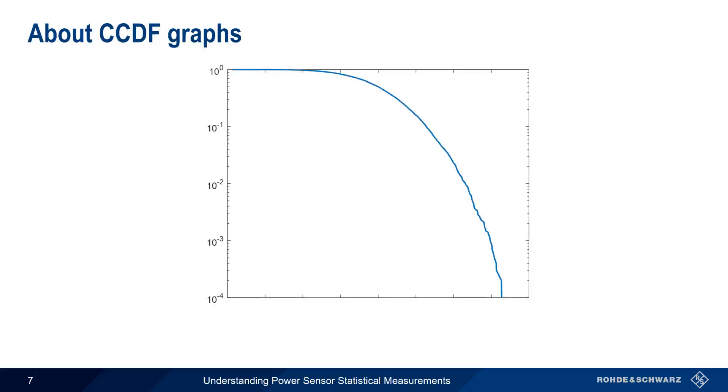Let's take a closer look at the CCDF graph. The y-axis is cumulative probability, usually plotted on a log scale. The x-axis is power and can be plotted in two different ways.